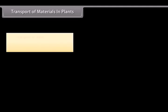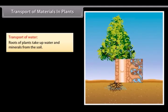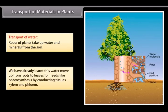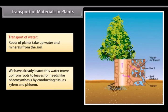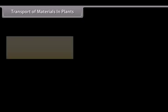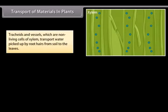Transport of materials in plants. Transport of water. Roots of plants take up water and minerals from the soil. We have already learnt this water moves up from roots to leaves for needs like photosynthesis by conducting tissues, xylem and phloem. Tracheids and vessels, which are non-living cells of xylem, transport water picked up by root hairs from soil to the leaves.